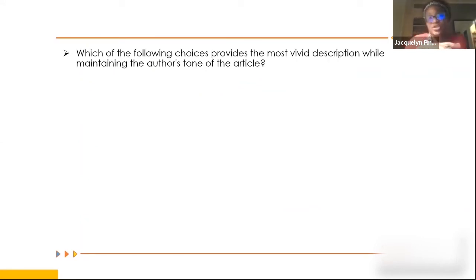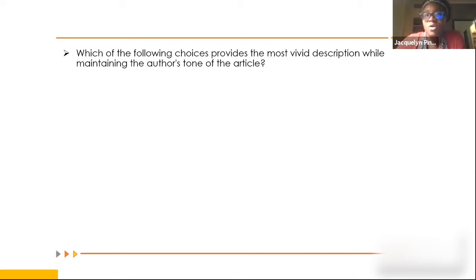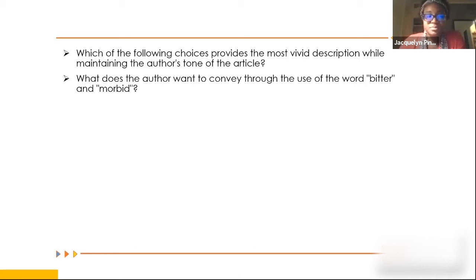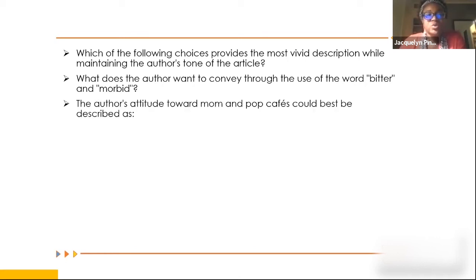Example questions include: 'Which of the following choices provides the most vivid description while maintaining the author's tone of the article?' Another: 'What does the author want to convey through the use of the words bitter and morbid?' - using vocabulary words in context to determine what message is being sent by using certain words.